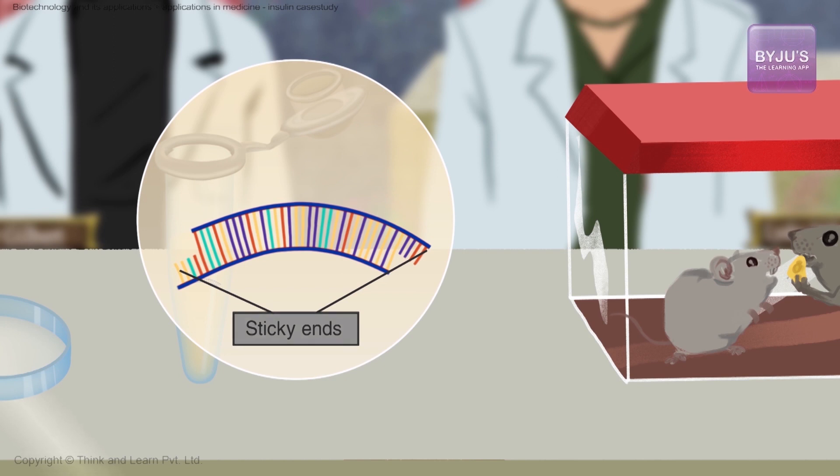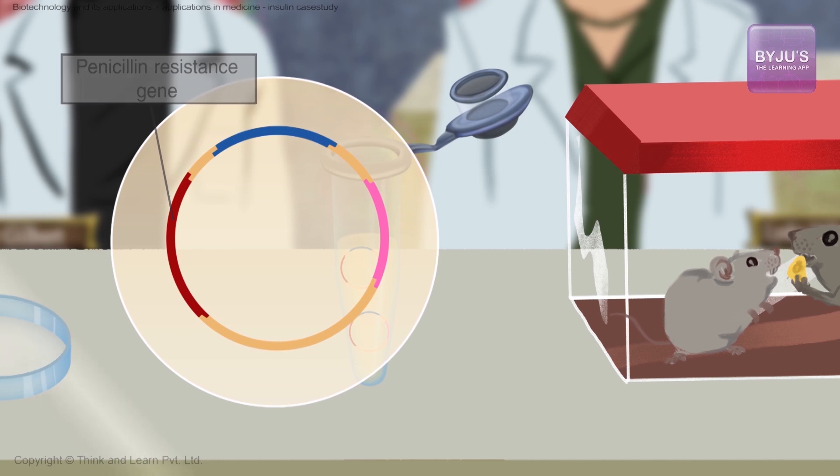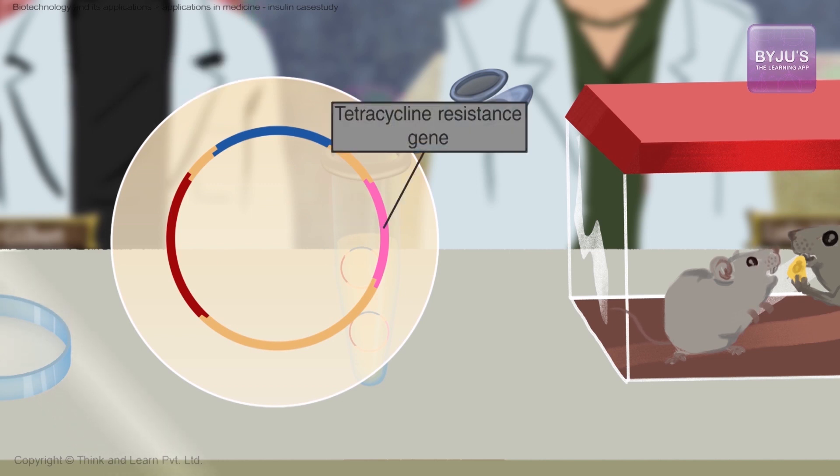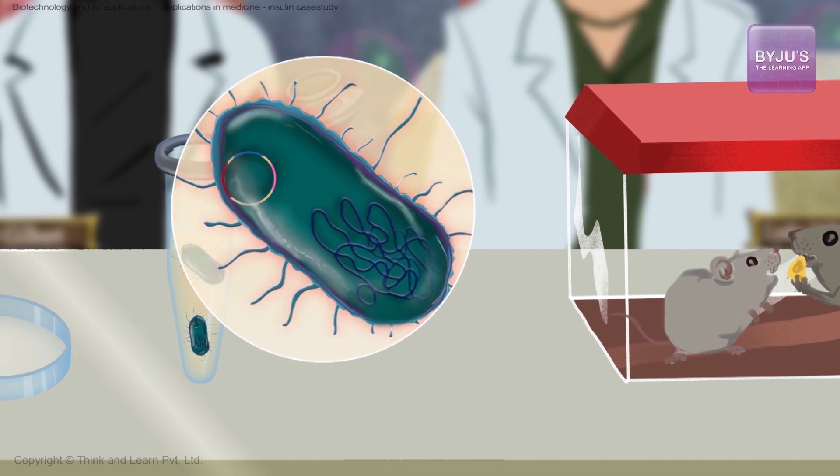The resulting sticky ends were inserted into the DNA of a bacterial plasmid carrying resistance to penicillin as well as to tetracycline. These plasmids were then introduced into bacterial cells.